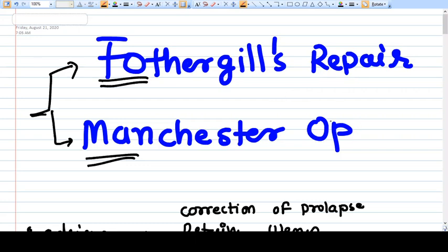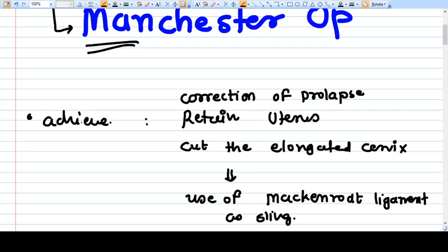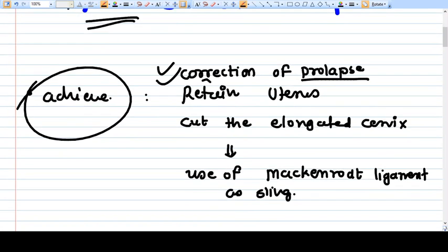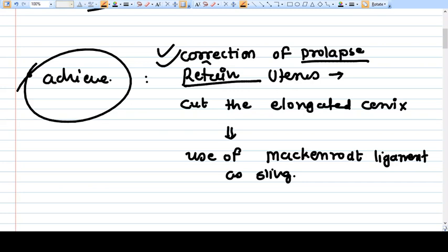When we do this kind of surgery, what we want to achieve is correction of prolapse, retain the uterus and menstruation function, but we don't want pregnancy in future. We want to preserve the uterus but not the reproductive function, that means pregnancy. We want just menstruation function to be retained.